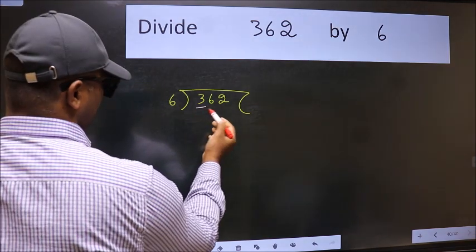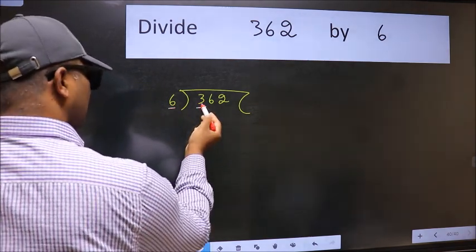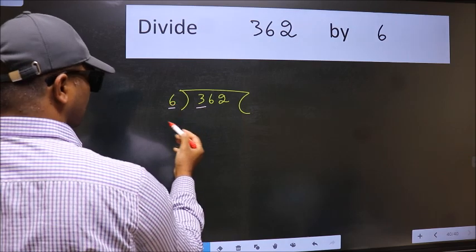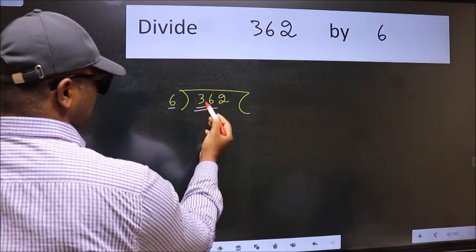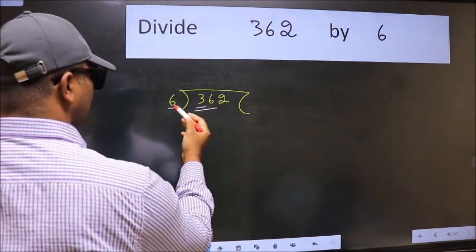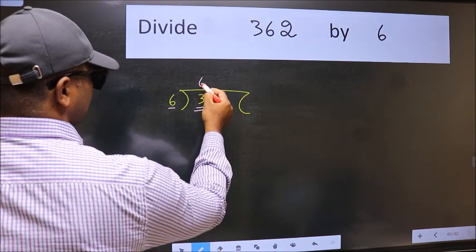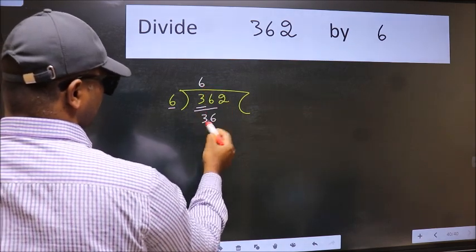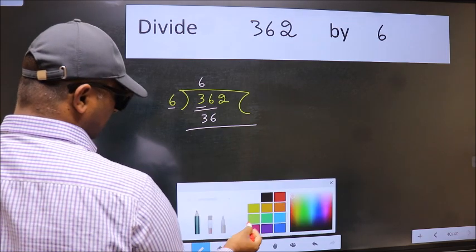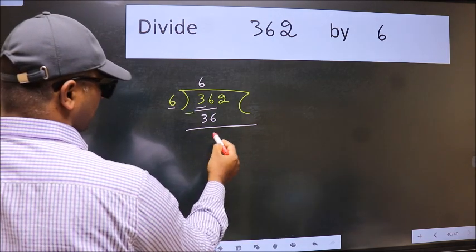Here we have 3 and here 6. 3 is smaller than 6. So, take 2 numbers, 36. When do we get 36 in 6 table? 6 times 6 is 36. Now, we should subtract. We get 0.